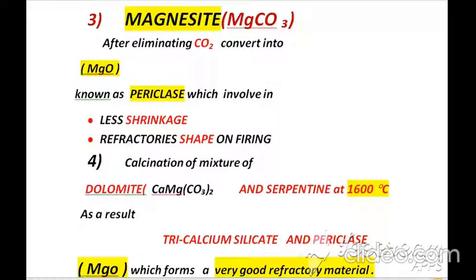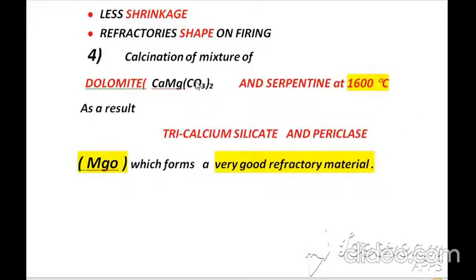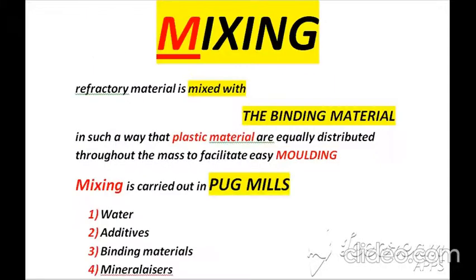Third, we will treat magnesite (MgCO3), and after eliminating CO2 it will convert into MgO, known as periclase. This is used in the manufacturing of refractory bricks due to two reasons: less shrinkage, and the refractory retains its shape on firing. Finally, we will calcine a mixture of dolomite and serpentine at 1600°C, and as a result we obtain tricalcium silicate and periclase, which are very good refractory materials.